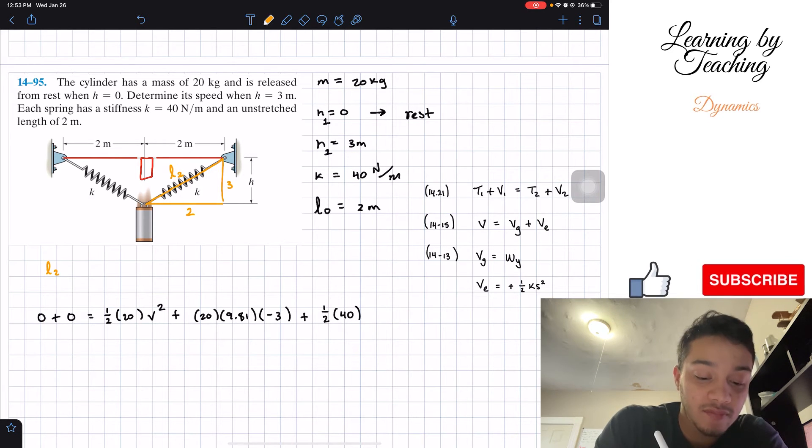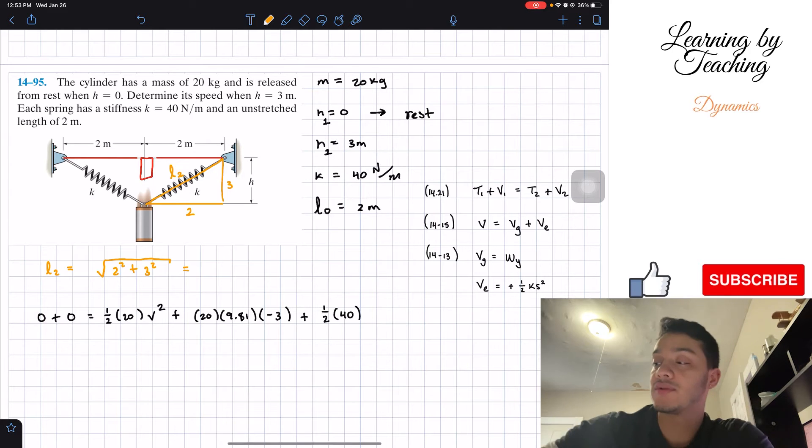For L2, we're going to apply Pythagorean theorem. This will be two squared plus three squared. This should equal... We're going to utilize our calculator. This gives me a total of 3.60555. I'm going to limit it to this amount of significant figures.